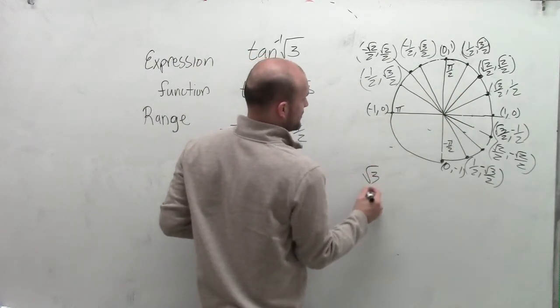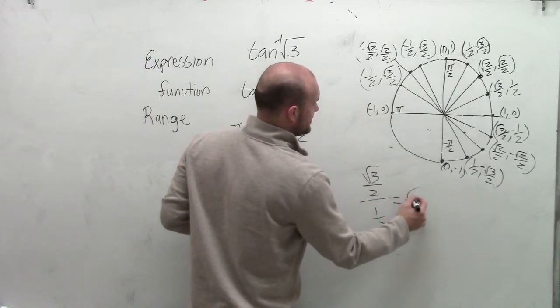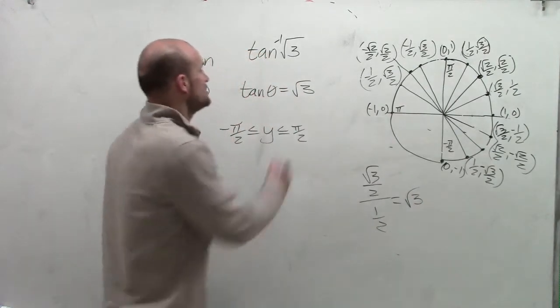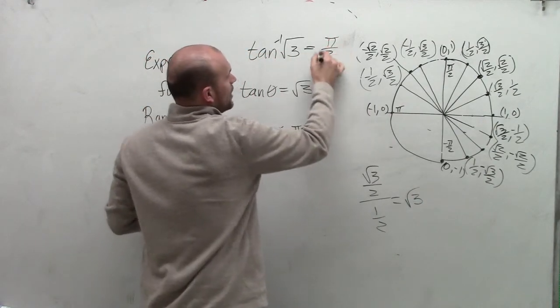I would have (√3/2) divided by (1/2). When I simplify that, I get √3. Therefore, the inverse tangent of √3 equals π/3.